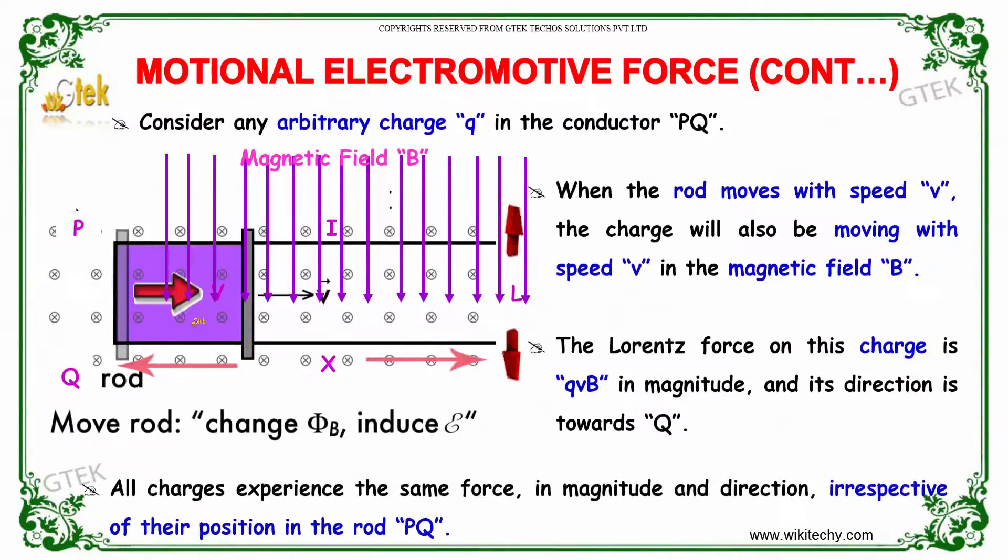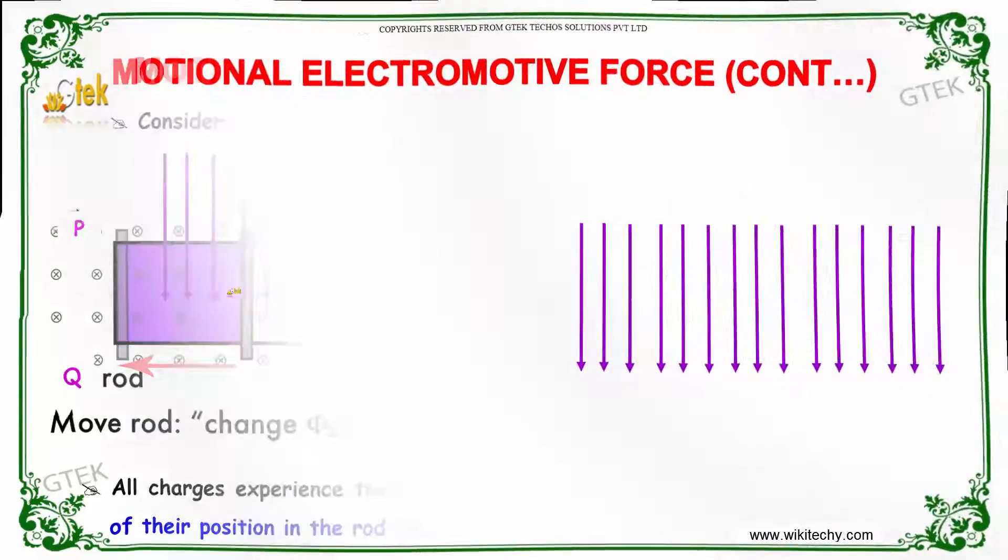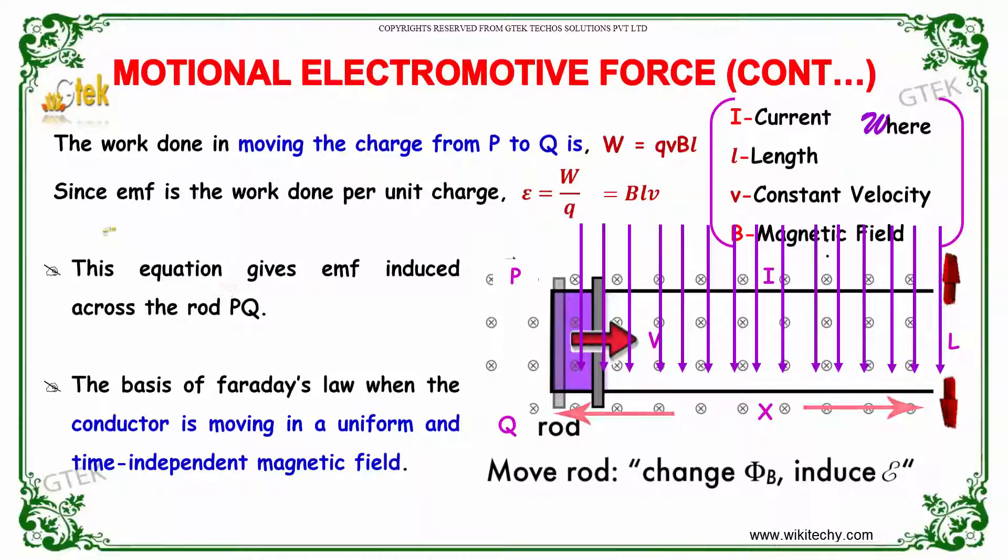Consider an arbitrary charge Q in the conductor PQ. When the rod moves with the speed V, the charge will also be moving with speed V in the magnetic field B. The Lorentz force on this charge is Q into V into B in magnitude, and its direction is towards Q. All charges experience the same force in magnitude and direction irrespective of their position in the rod PQ. Obviously the work done in moving the charge from P to Q is given by W equals Q into V into B into L.